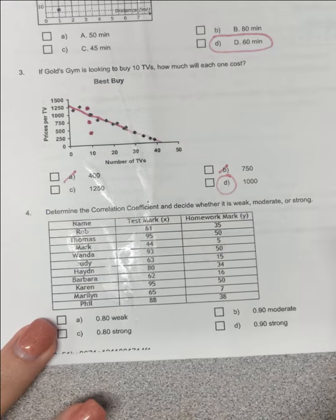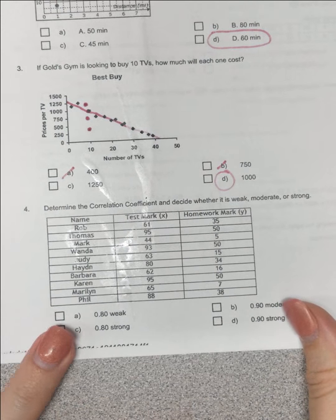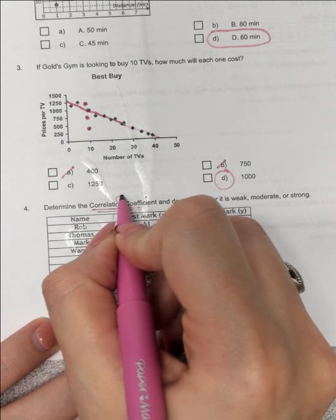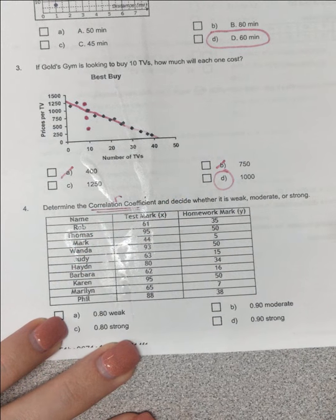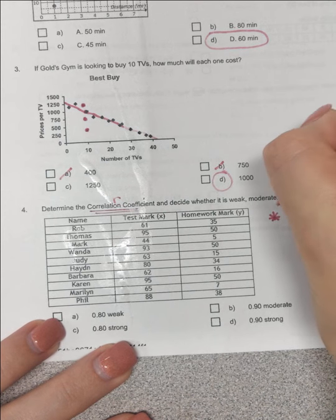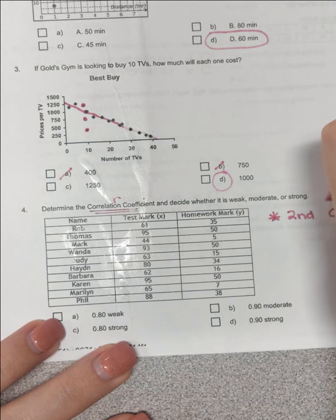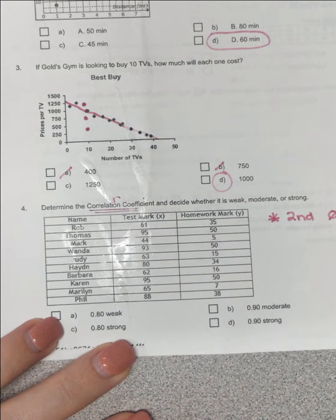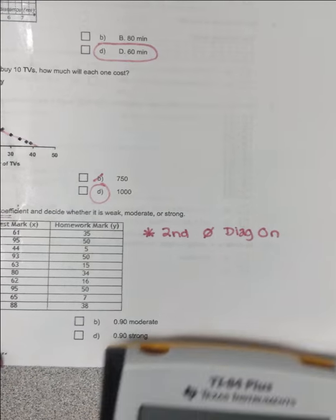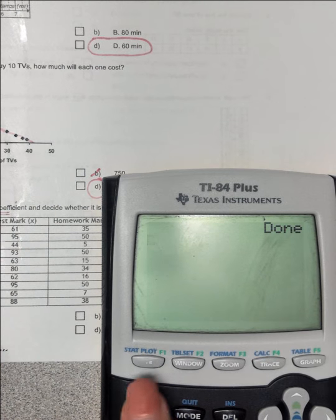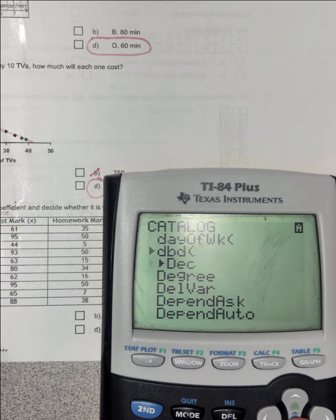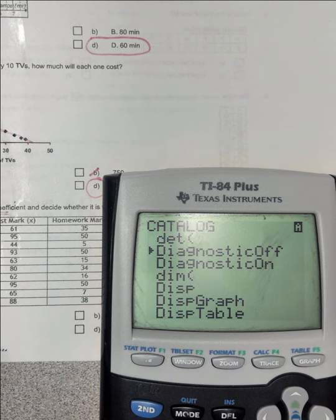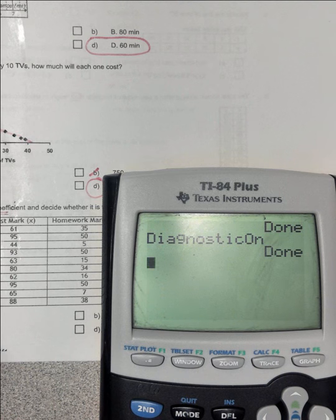Number four. Let's go ahead and see. Determine the correlation coefficient and decide whether it's weak, moderate, or strong. The correlation coefficient, this is your R value on the calculator. So if you don't remember your steps, you're going to click 2nd, 0, go to Diagnostics, On. So I'm going to go on my calculator, 2nd, 0, all the way down to Diagnostics, On. Enter, enter.